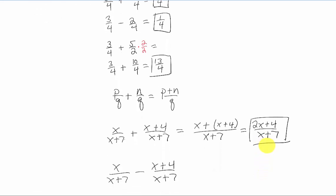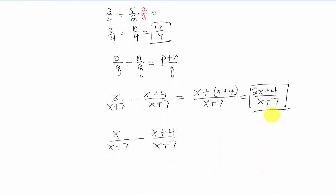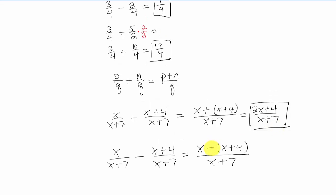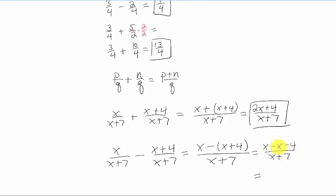What if you're subtracting these two rational expressions? The rules are the same but this can be tricky because you have to remember to keep your parentheses around your numerators and distribute the negative sign through the entire second numerator. This negative goes with this x as well as this 4. The x minus x cancels and you're left with 0, but you still have this negative 4 over x plus 7.